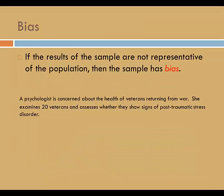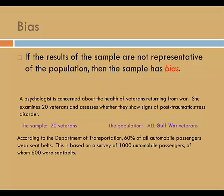If the results of a sample are not representative of the population, then the sample has bias. We want to avoid bias as much as possible — good data collection can help. If you realize that the pool from which you choose your sample is not the intended population, you may need to revise your conclusion. For example, if the psychologist selects a sample from Gulf War veterans, then the population is Gulf War veterans and not all veterans. In the seatbelt example, if the survey was conducted exclusively in the U.S., then the population should be defined clearly as 60% of all U.S. passengers wore a seatbelt.